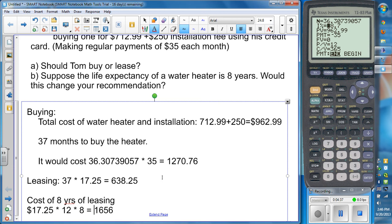So $1,656, but if you take a look, remember it only costs $1,270.76 to buy the water heater. So over this same period of time, now over eight years, buying the water heater is actually the better bet.